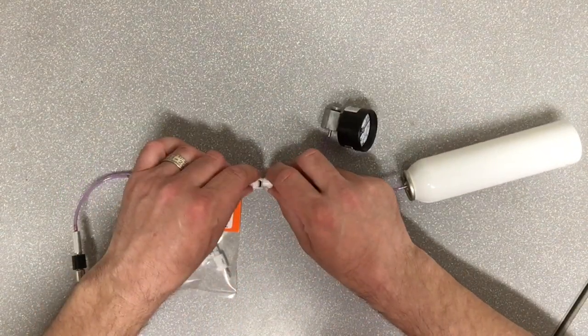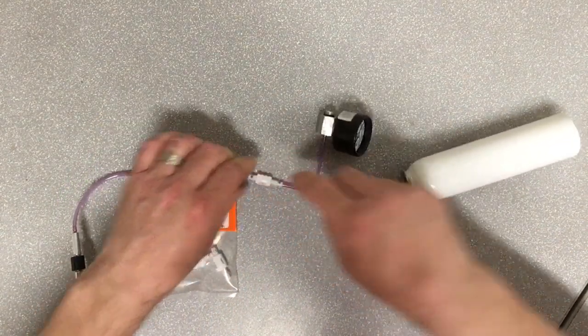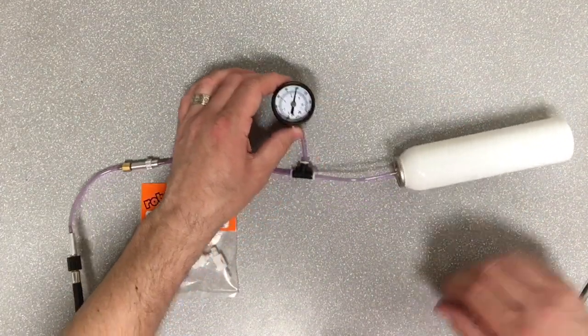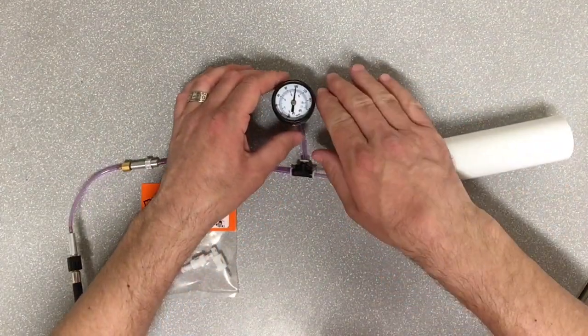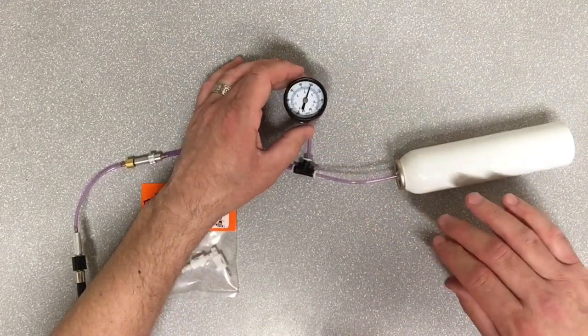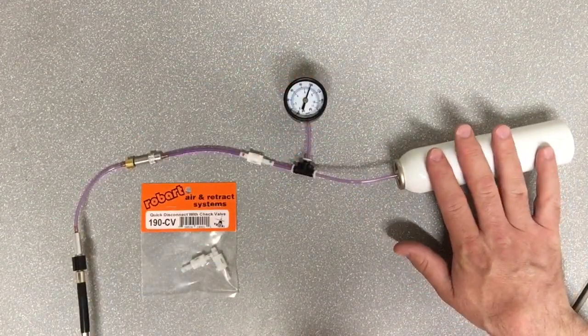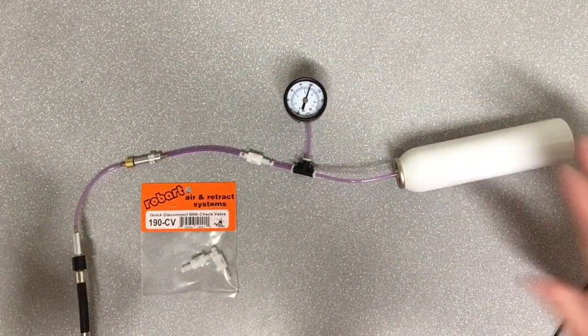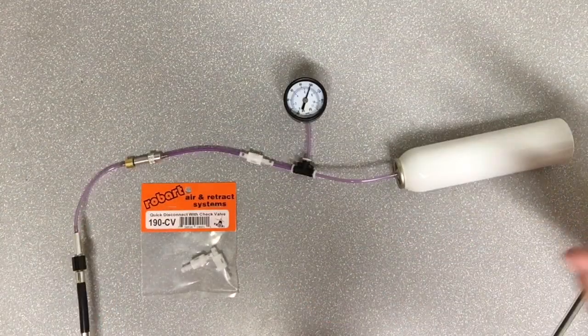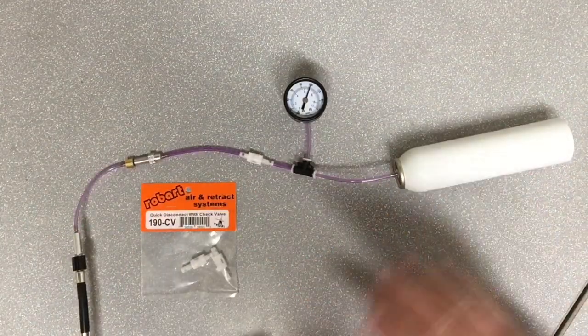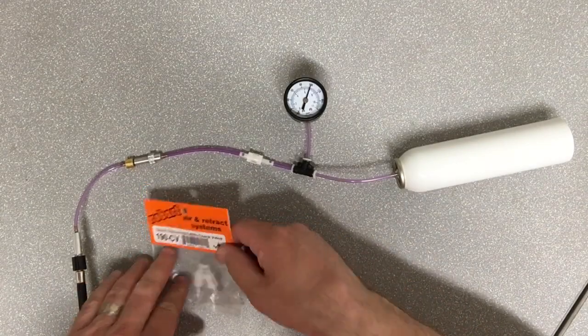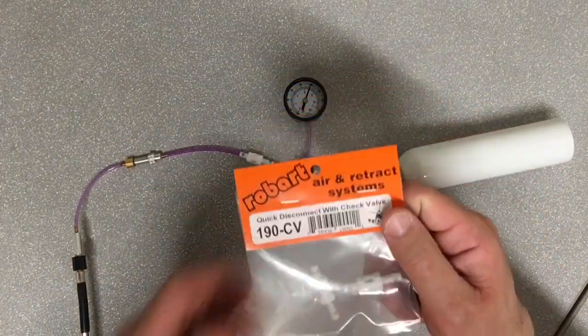Put it back together, and now the air is free to flow between. If you're looking for an option to keep your air tank full, do a quick disconnect, then reconnect without having to re-pump every time, part number 190-CV is for you.